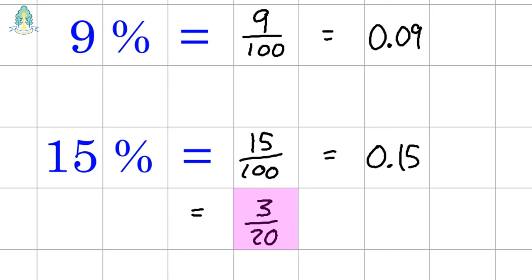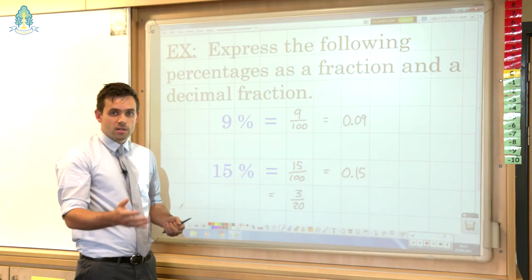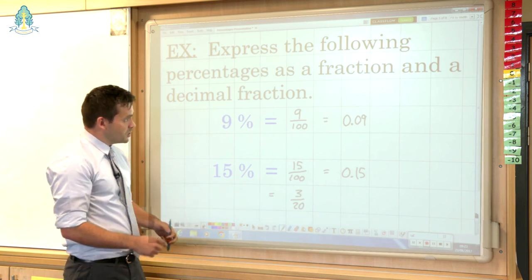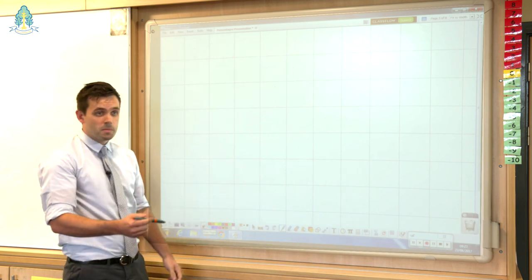Once we've gone over this with the pupils, we can look back at the commonly used ones that they may have known before and explain why 75% is 3 quarters, why 60% is 3 fifths, why 10% is a tenth, or even the most basic of all, why 50% is one half.